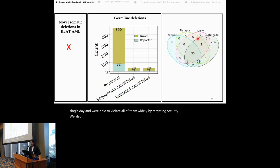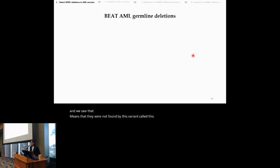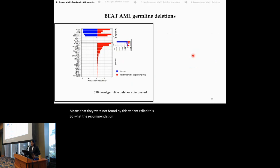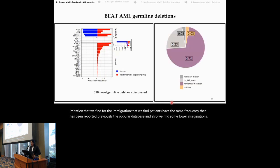We also tested the performance of other variant callers in finding these novel deletions and we saw that many of them were not found by these variant callers. So, here's a representation of the germline deletions that we found. One thing to note is that the MMG deletions that we find in patients have the same frequency that has been reported previously in the PopMax database. And also, we find some novel MMG deletions. These MMG deletions were enriched for non-frameshift type of functional annotation, which is what we would expect for germline deletions.